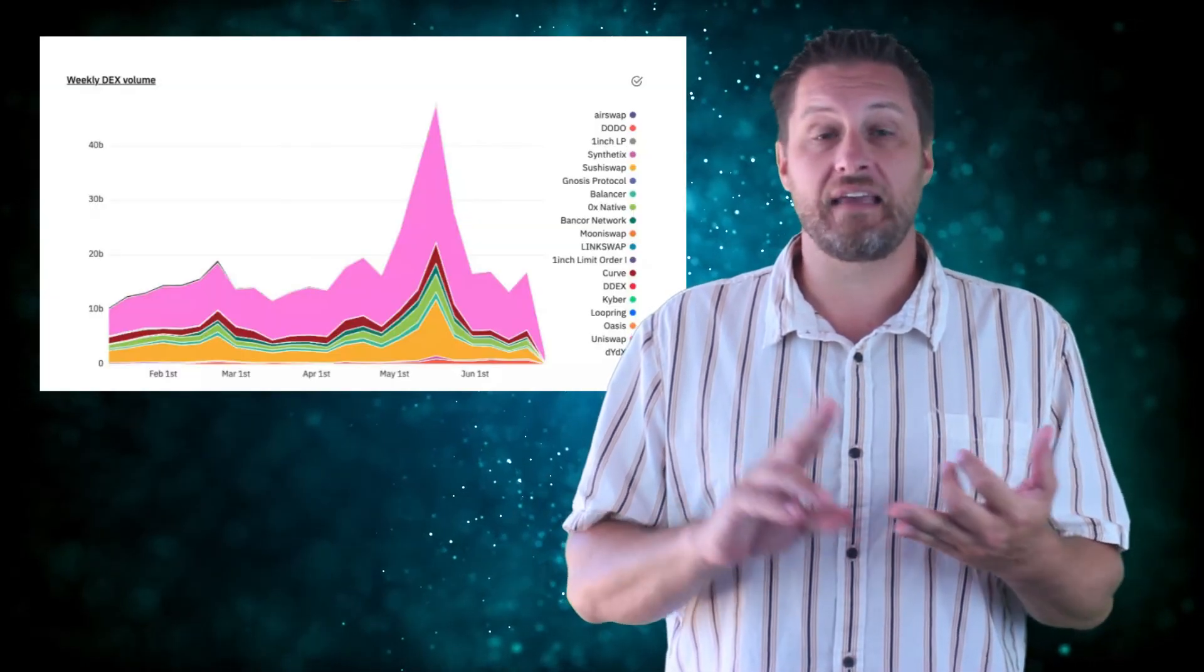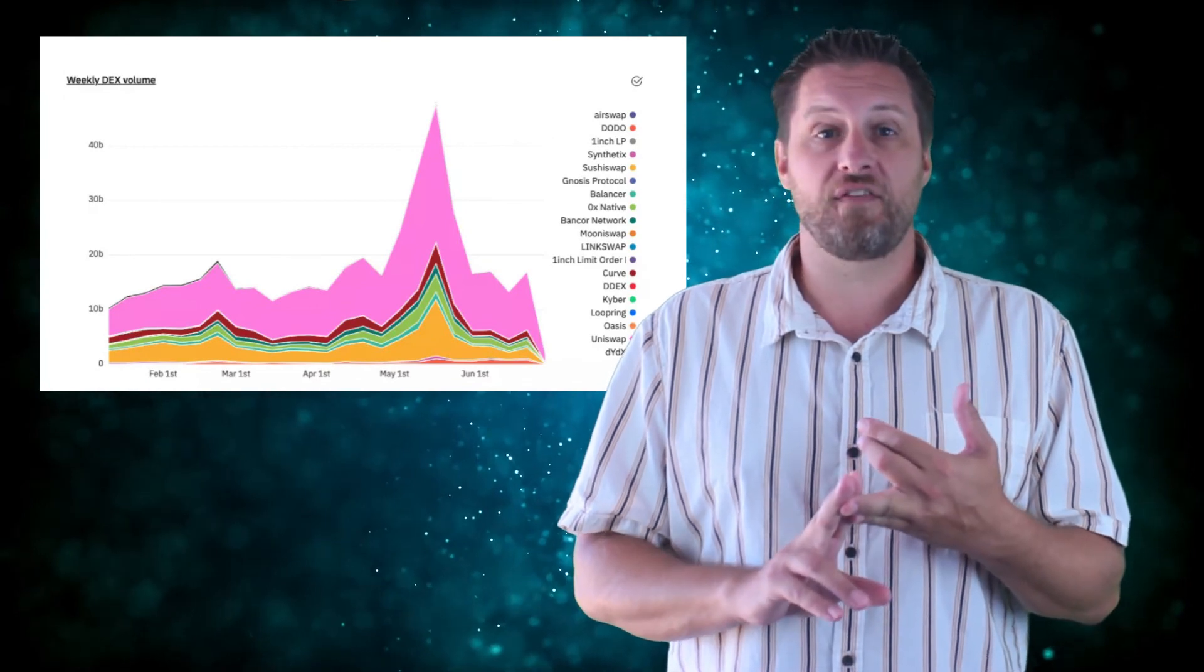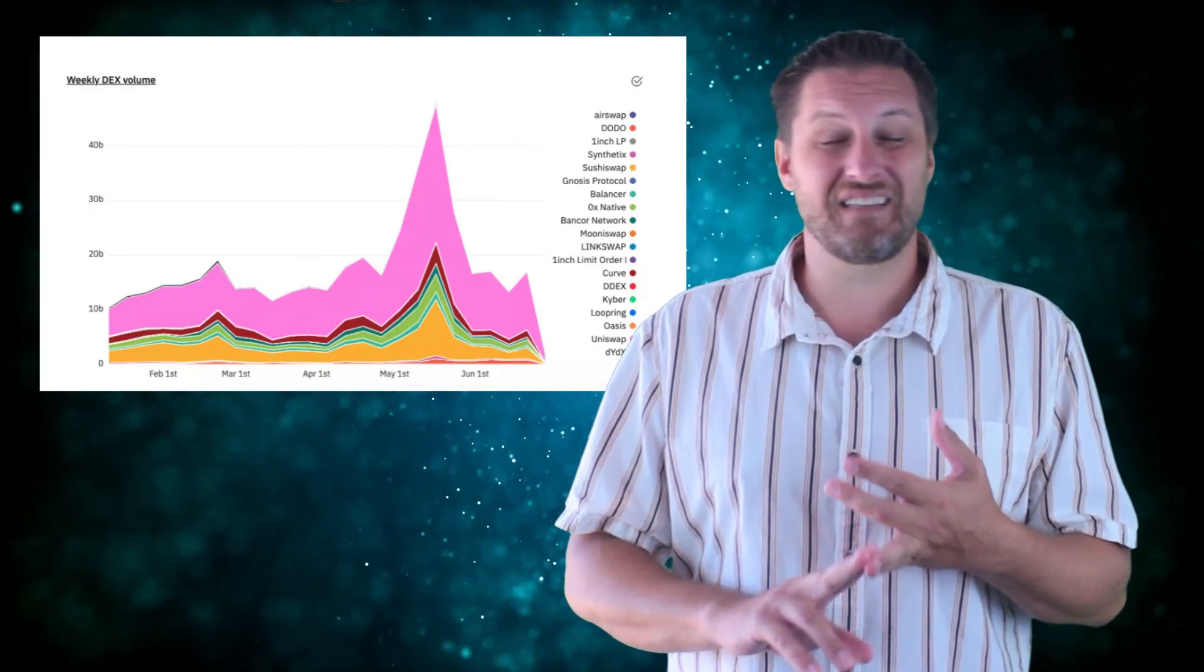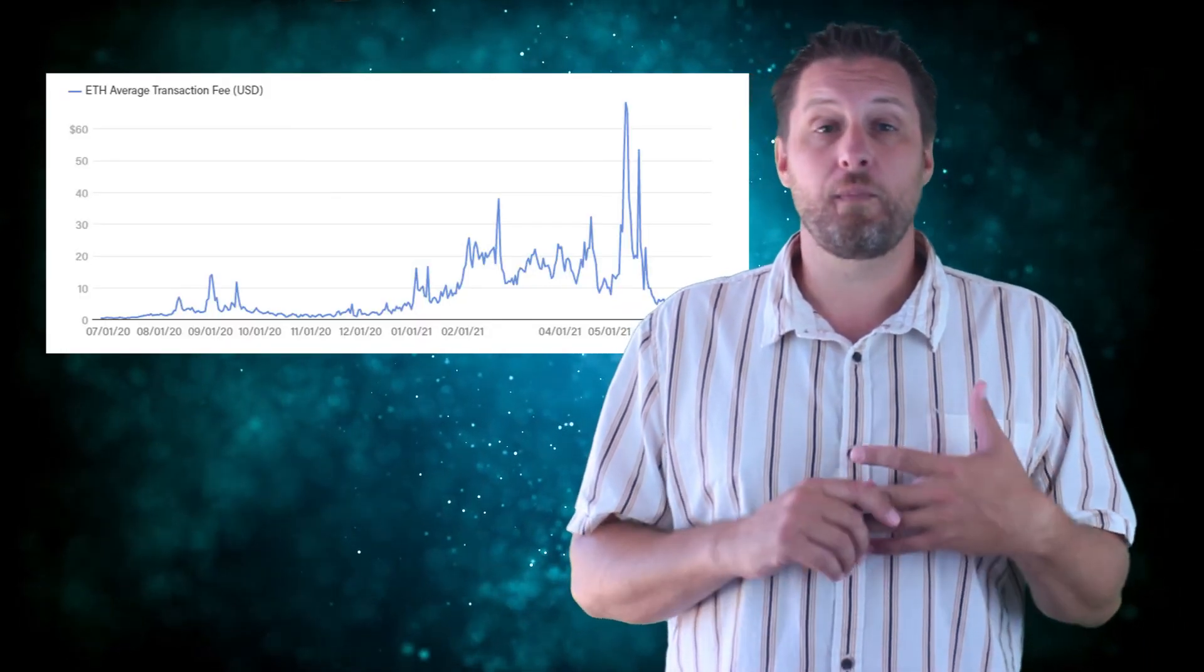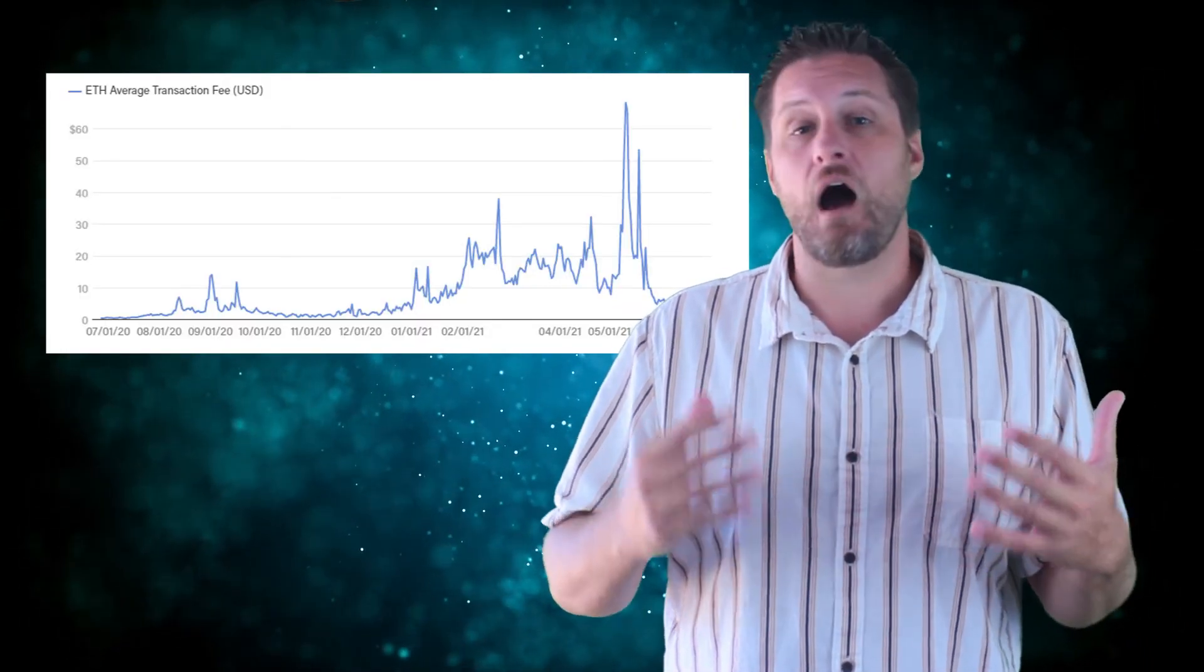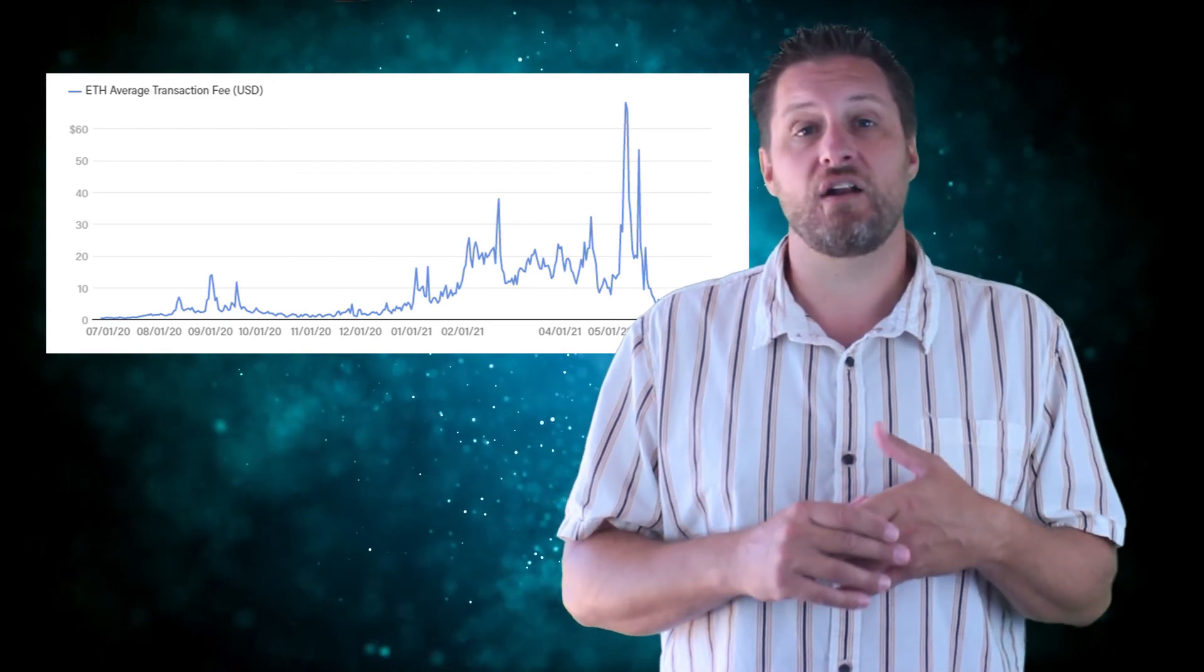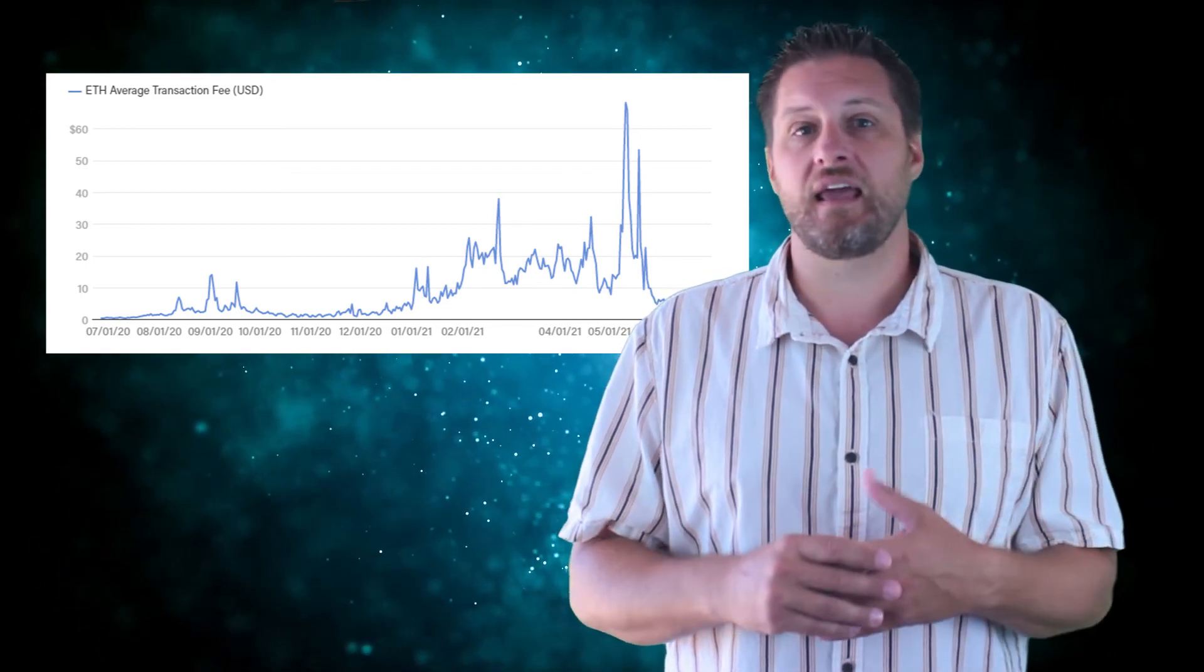To understand how Ethereum 2.0 and Matic are so intertwined, we really need to look back at the beginning of 2021. This is when NFT growth and gaming growth took off on the Ethereum blockchain and sent those gas prices absolutely sky high. There was a point earlier this year where you were paying $50, maybe even $60 per transaction on Ethereum. You can't run a game, you can't run an NFT network when you're having to pay that much for each and every transaction.